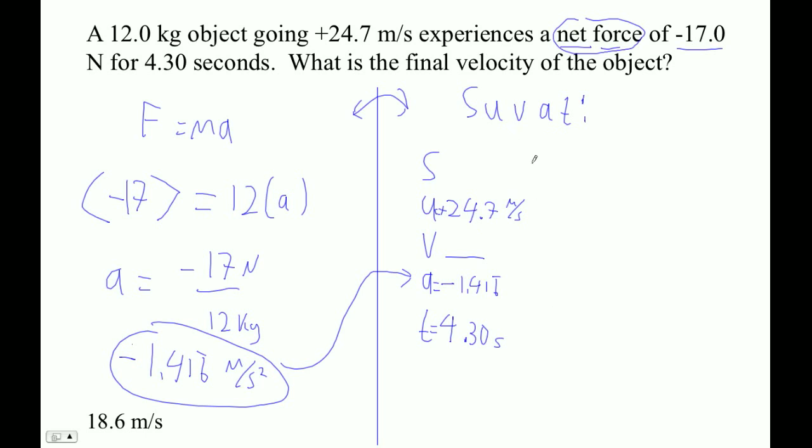Okay, so now the formula here is we want to use one that has no S, because we want the final velocity. So let's use V equals U plus AT. And then, let's see, that is 24.7 plus negative 1.416 times 4.3.